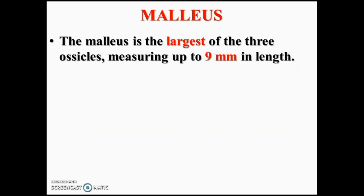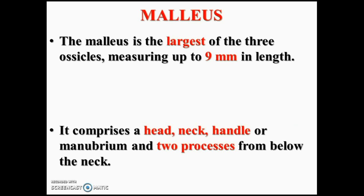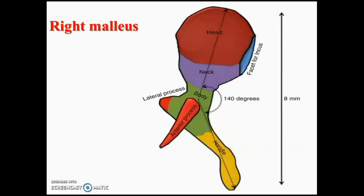The malleus is the largest of the 3 ossicles, measuring up to 9 mm in length. It consists of a head, neck, body, handle, and 2 processes. You will see a globular head, a constricted neck below the head, and the body. From the body you will see 2 processes — lateral and anterior — with the lateral process attached to the tympanic membrane. The handle of malleus runs posteriorly, medially, downwards, backwards, and medially.